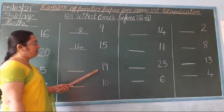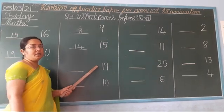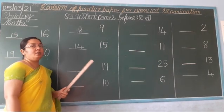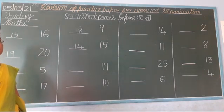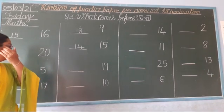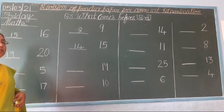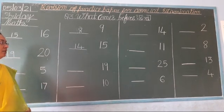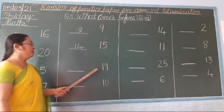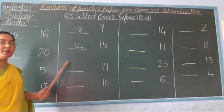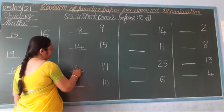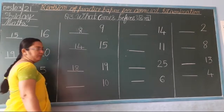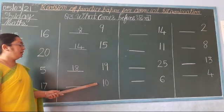Next, which number? 1, 9 — 19. Yes. So you speak: 11, 12, 13, 14, 15, 16, 17, 18, 19. Which number comes before? 1, 8 — 18. Right here. Okay?